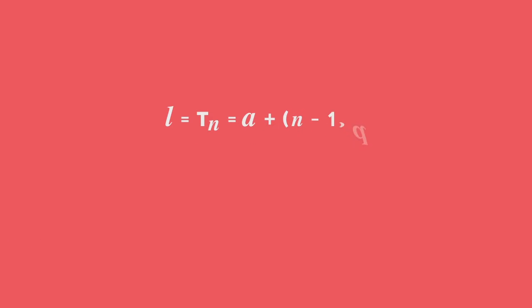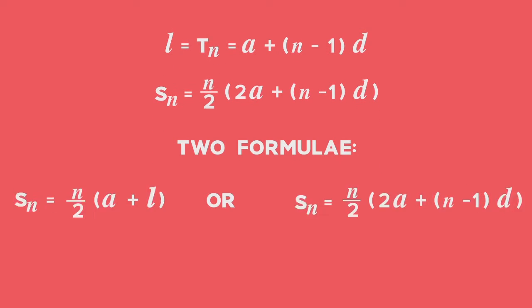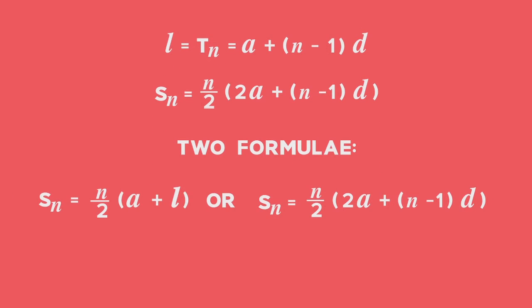The last term L is equivalent to TN, which is equal to A plus the result of n minus 1 multiplied by D. Then we can rewrite Sn as: Sn is equal to half n into 2A plus the result of n minus 1 multiplied by D. Both formulae for Sn can be used to evaluate the sum of an arithmetic series, although you may prefer one over the other depending on what information is given.